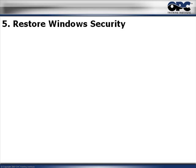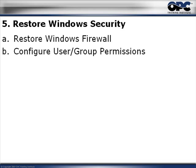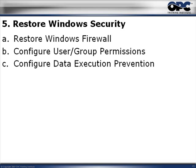In this particular step, what we're going to do is restore the Windows security and put it back. There are a few steps here. Number one, we're going to restore the Windows firewall that we turned off before. We'll configure the user and group permissions. And last, we're going to configure the data execution prevention, DEP — remember, we also turned that off as well.